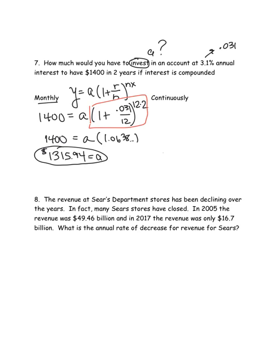The continuous part is a little easier. As soon as you see 'continuously,' the formula is y = ae^(rx). It's a less complicated-looking formula. I still want $1400 at the end, I still don't know a, e is just a number, the rate is 0.031, and the number of years is 2.